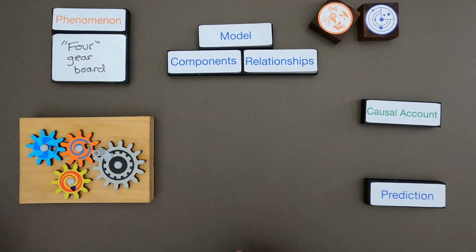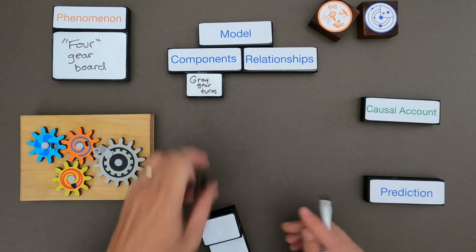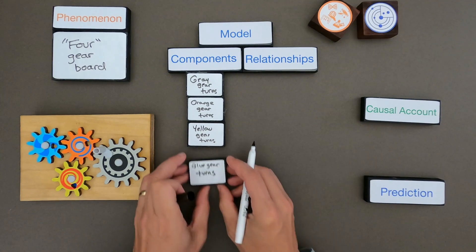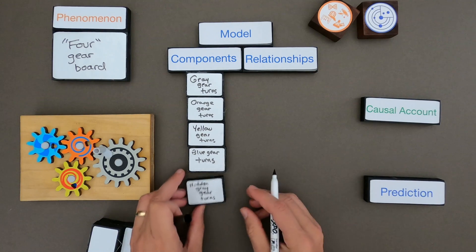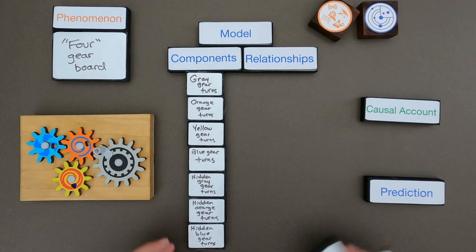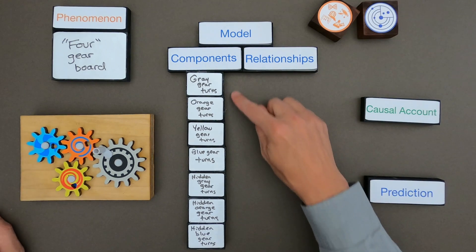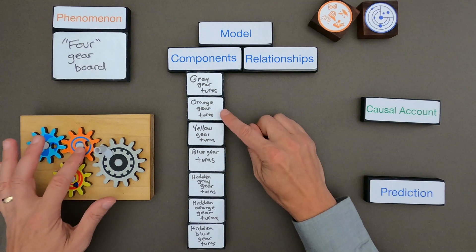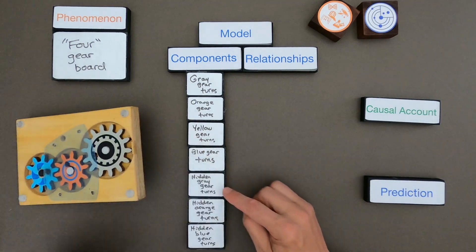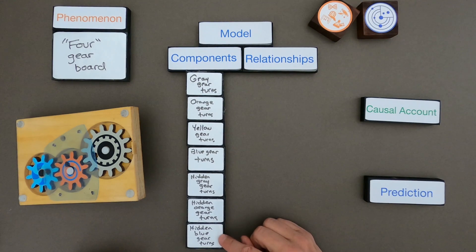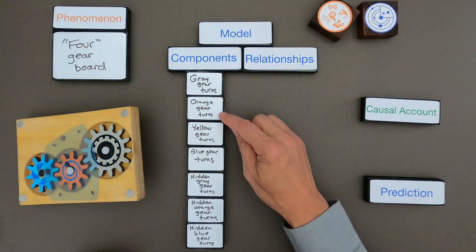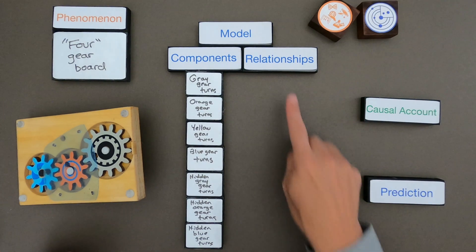So let me list all those out. The components I have — the first four are all the ones you can see on top: the gray gear turning, the orange gear turning, the yellow gear turning, and the blue gear turning. And then the next ones are the hidden gears: the hidden gray gear turning, the hidden orange gear turning, and the hidden blue gear turning. Since I wrote those as events it'll be really easy to say, for example, the gray gear turns the orange gear. Now I'm going to put those on our whiteboard and start working on the relationships.